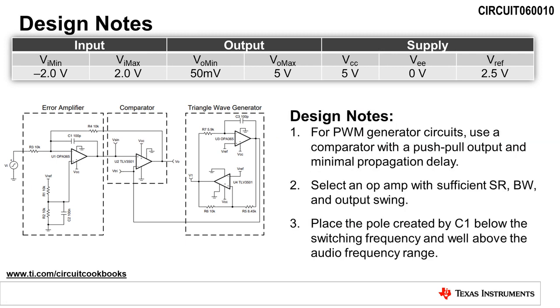When designing a PWM generator circuit, there are a few design notes to be aware of. First, be sure to use a comparator with a push-pull output and minimal propagation delay. Next, select an op amp with sufficient slew rate, bandwidth, and output voltage swing. Finally, place the pole created by C1 below the switching frequency and well above the audio frequency range.